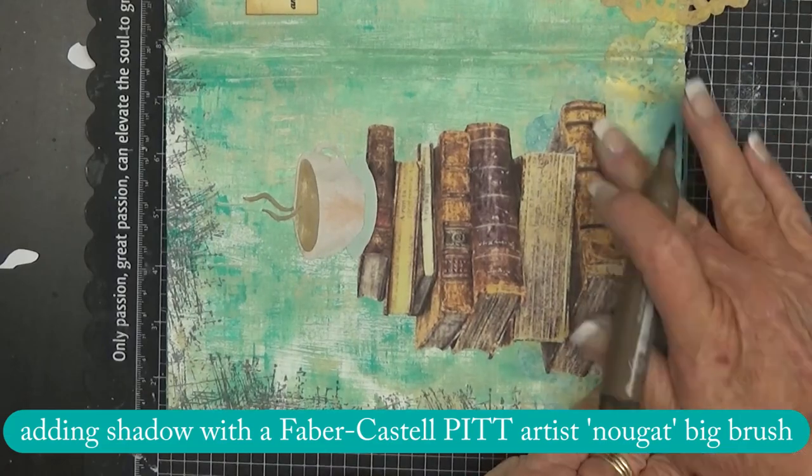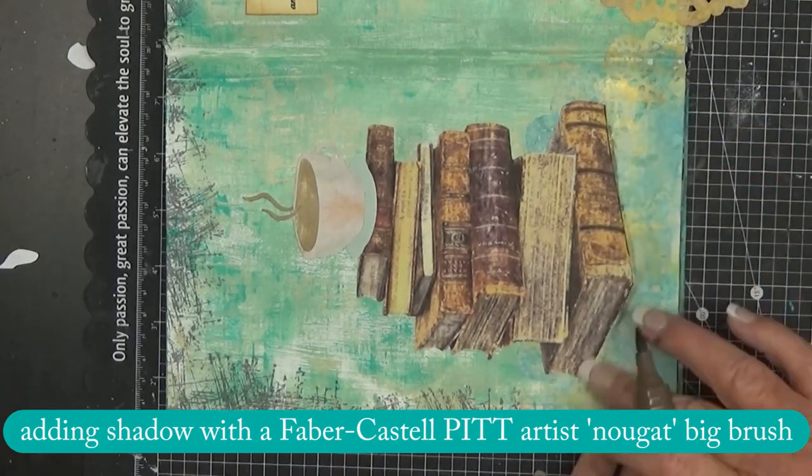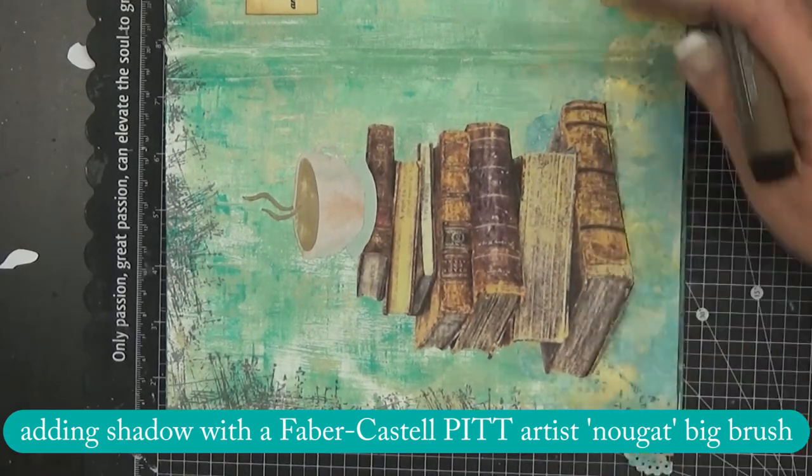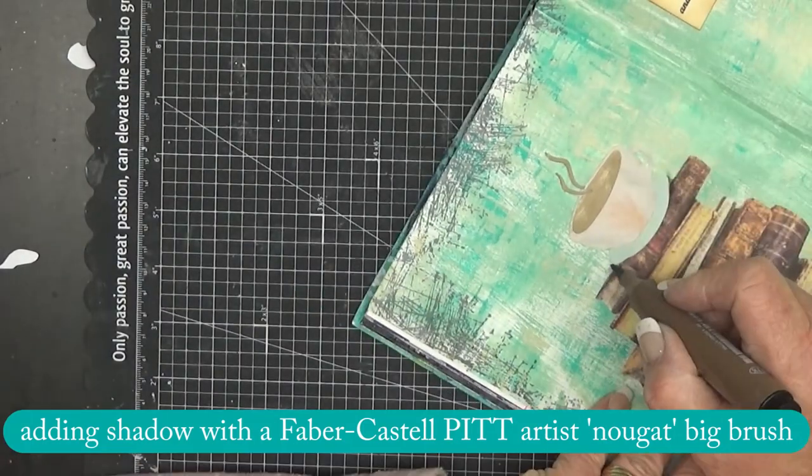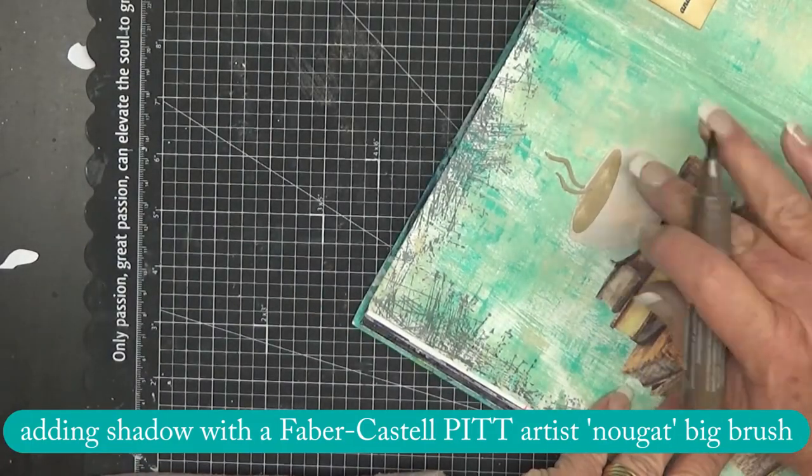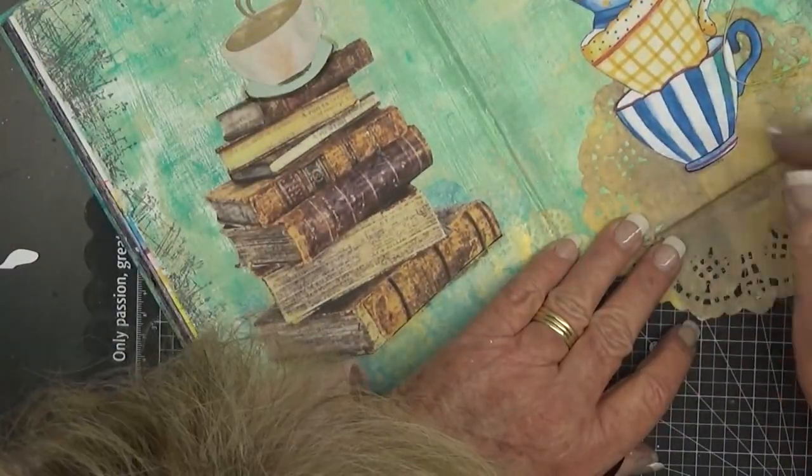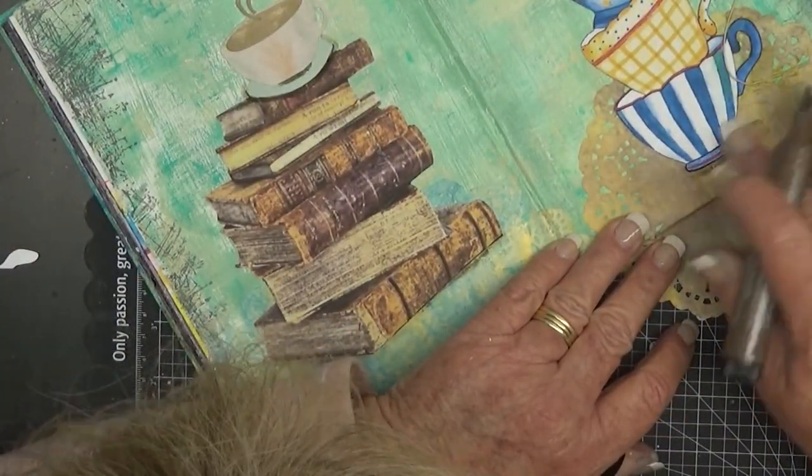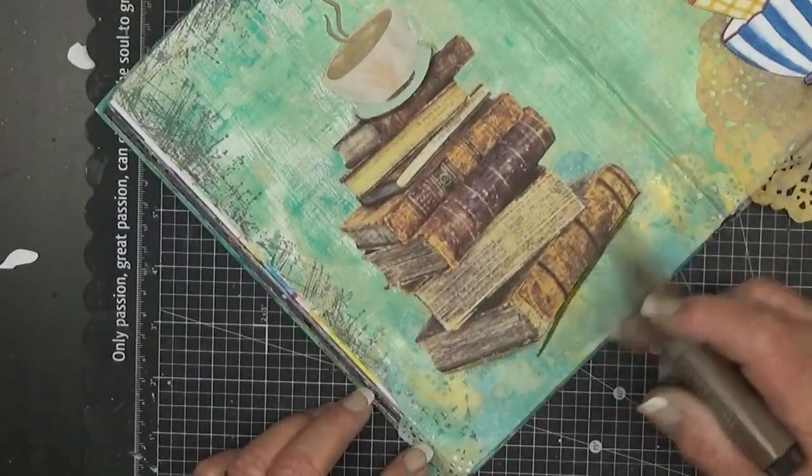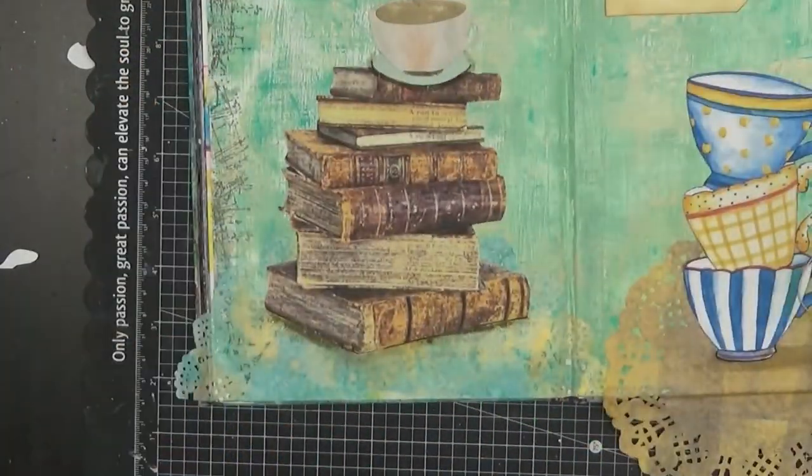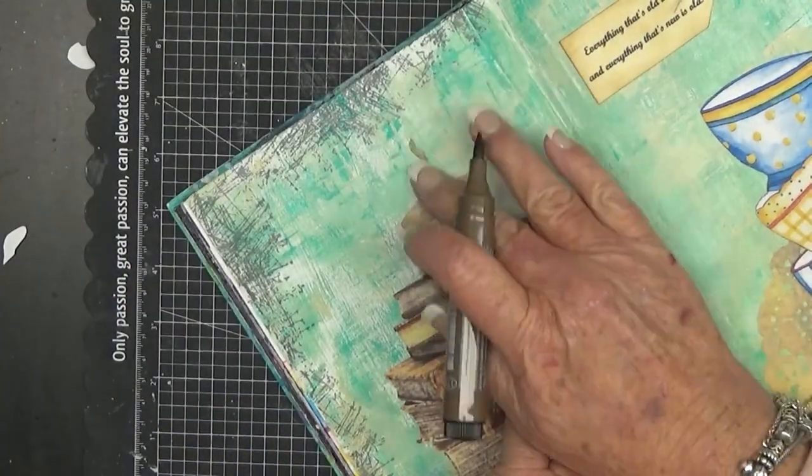Now once that was done I just decided to add some shading to the elements. I'm using a Faber-Castell Pitt Artist Big Brush Pen in Nougat.